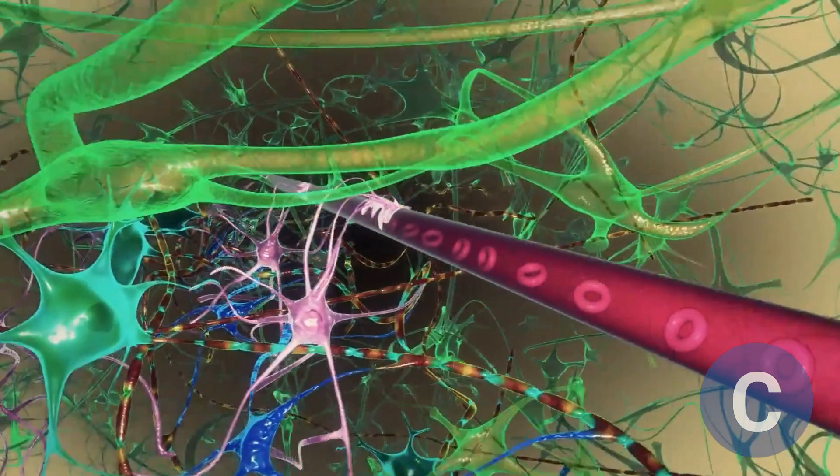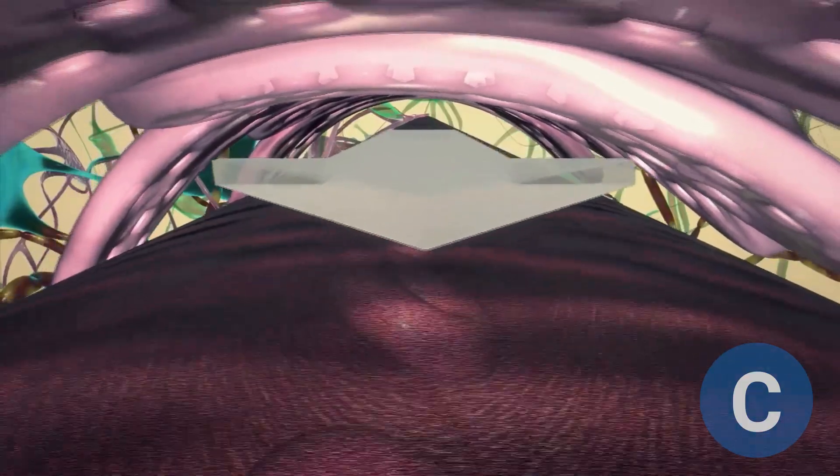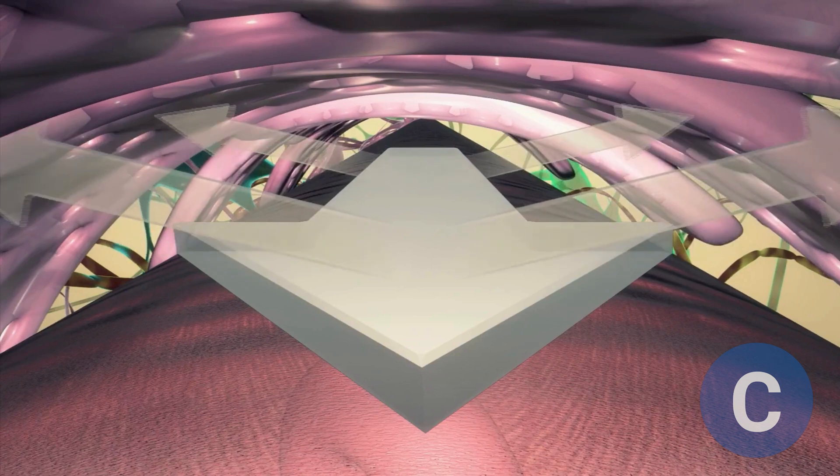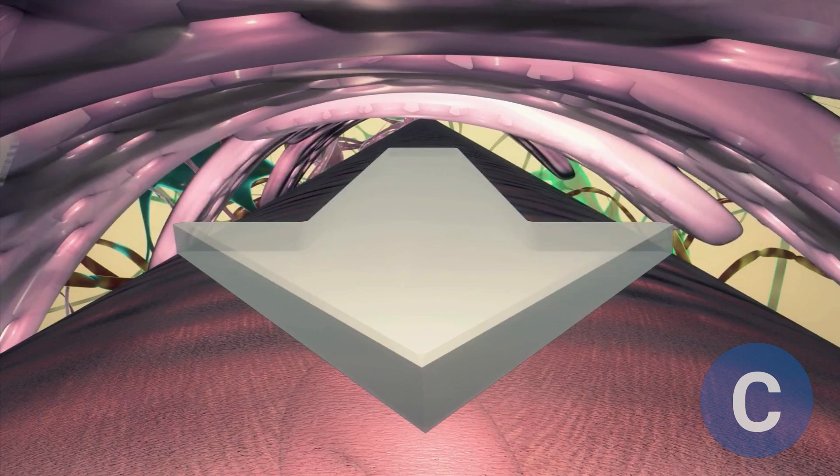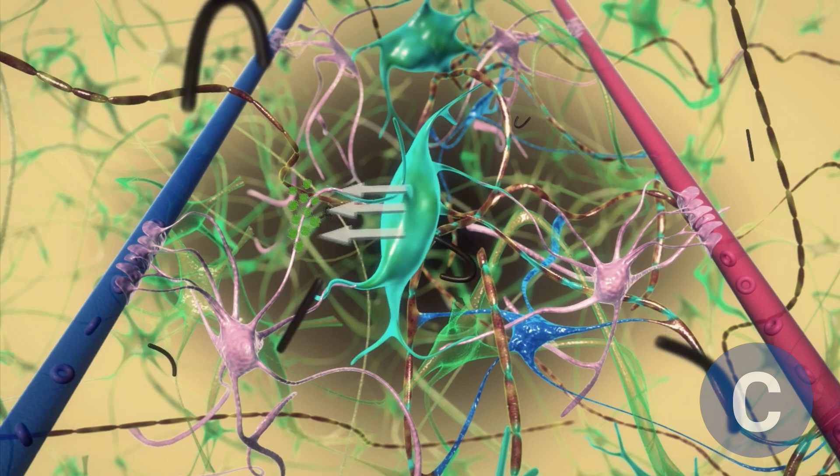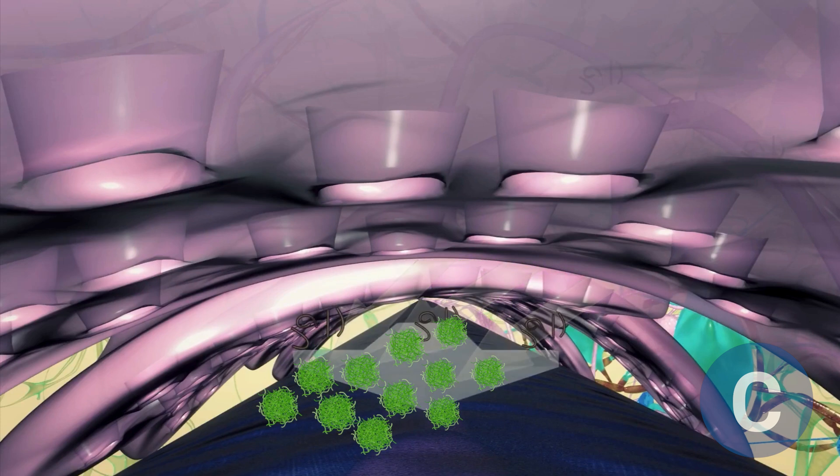This study was key to understanding the transport and clearance system of cerebrospinal fluid in the brain, introducing the concept of the glymphatic pathway. The authors demonstrated how this perivascular route supports the movement of cerebrospinal fluid and the removal of interstitial solutes within the brain tissue, including beta-amyloid, a protein linked to Alzheimer's disease.